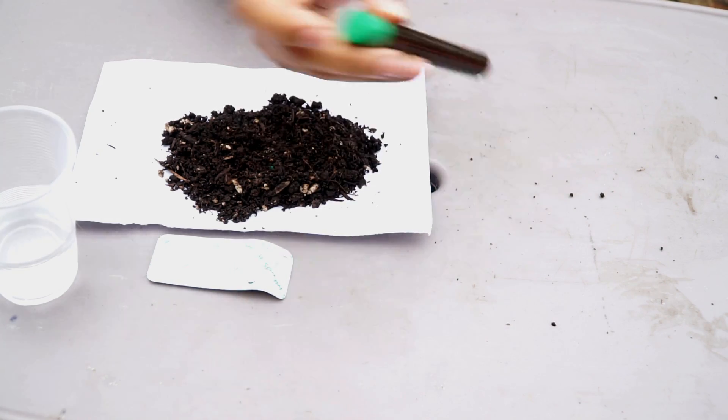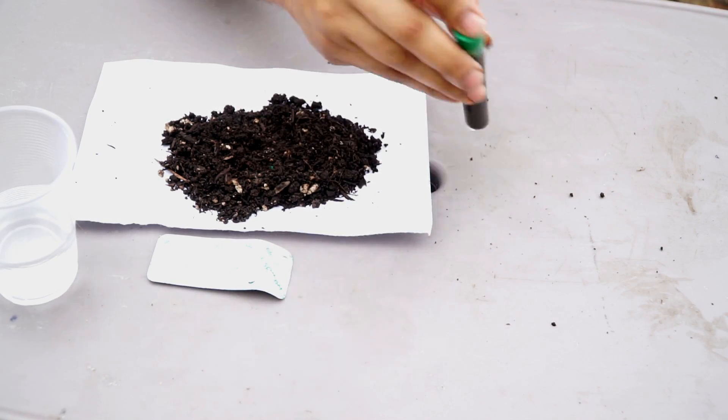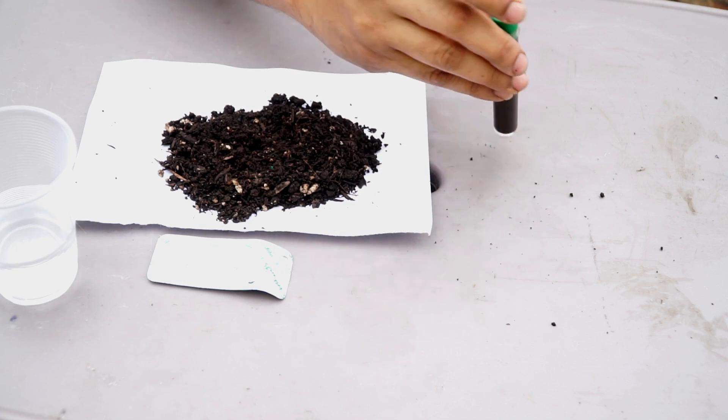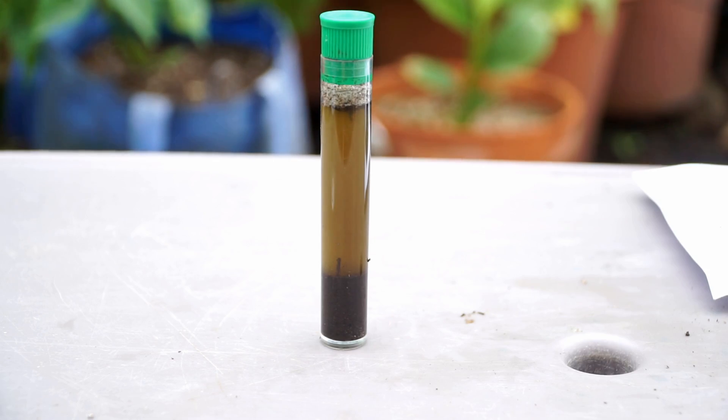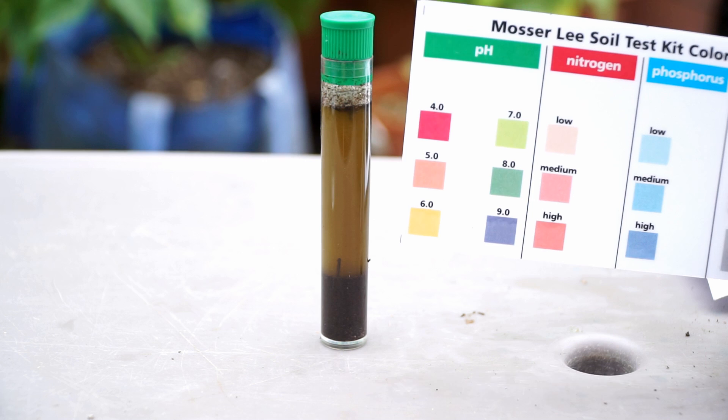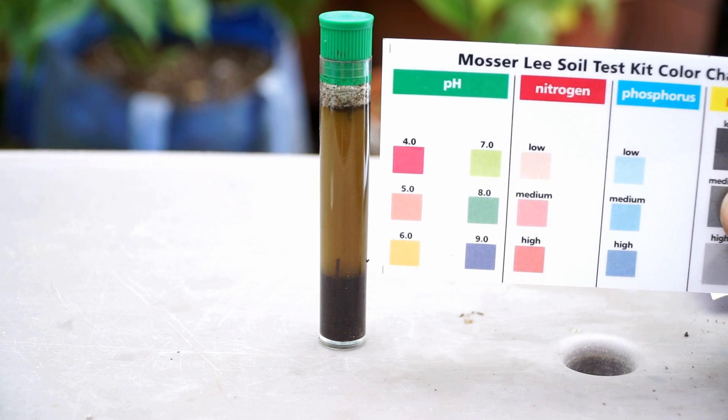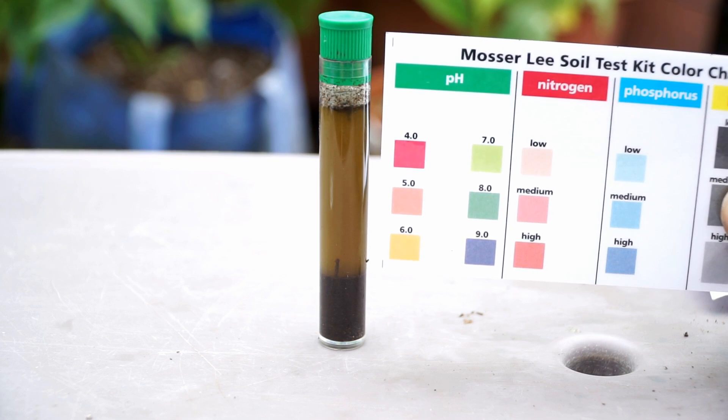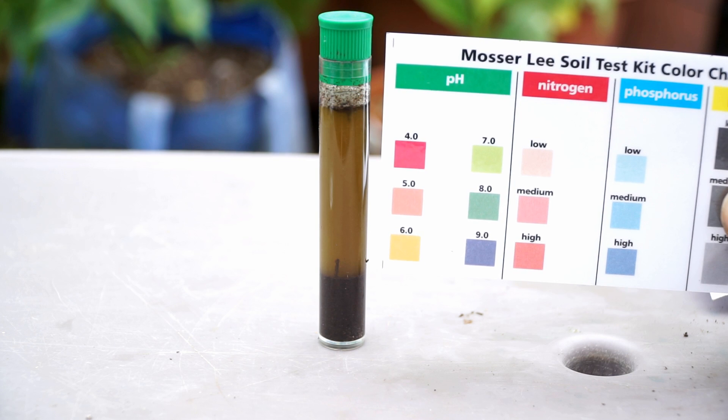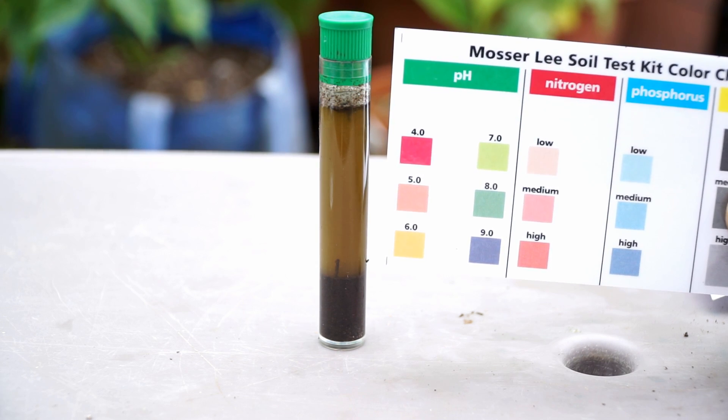Once you shake the solution very well with the soil, you let it stand for a few seconds, about 30 seconds to a minute. Once the soil settles down, you need to match the color of the solution on the top with the pH level.